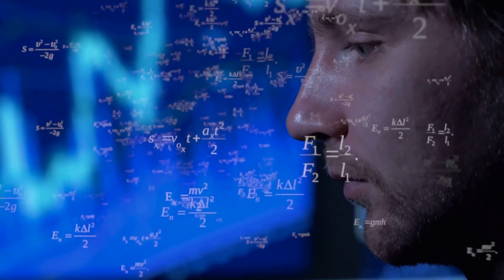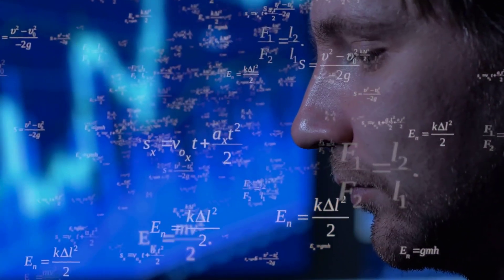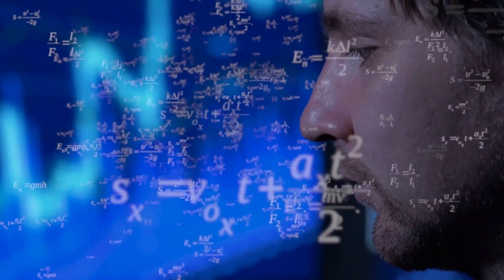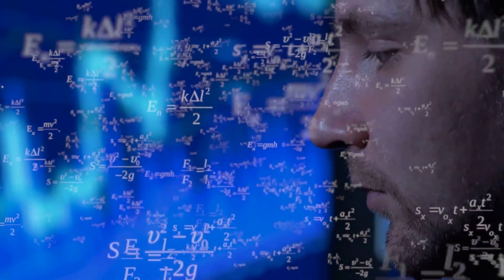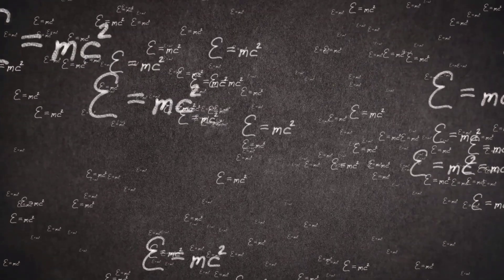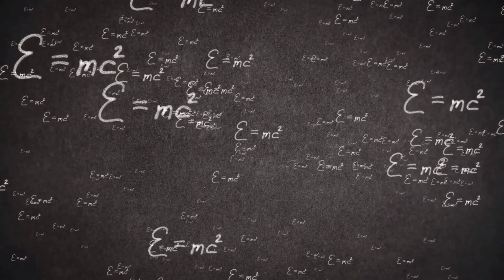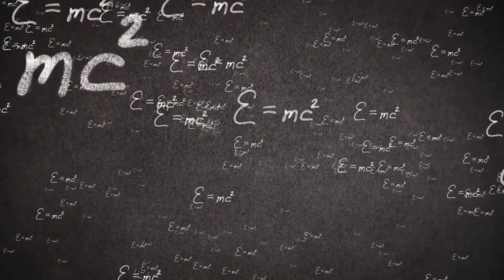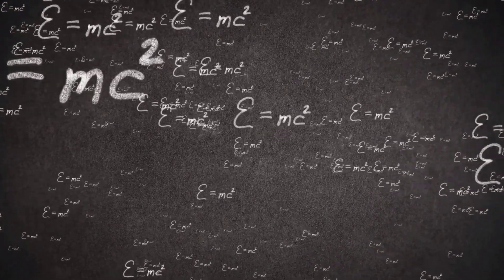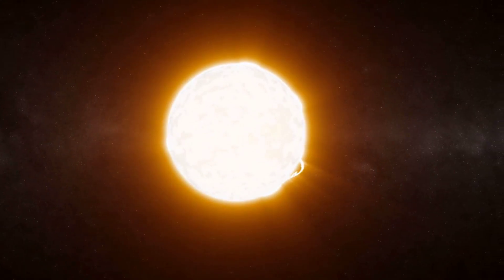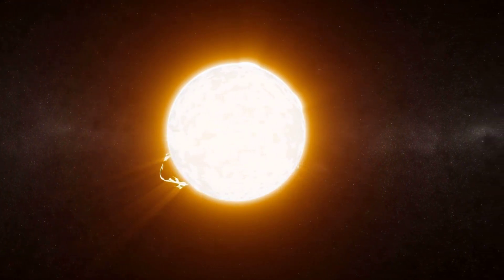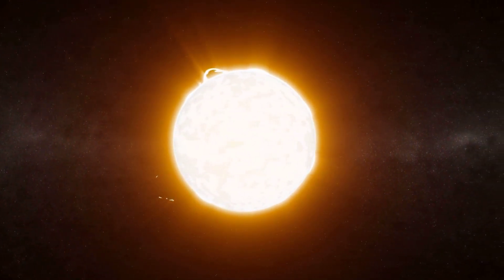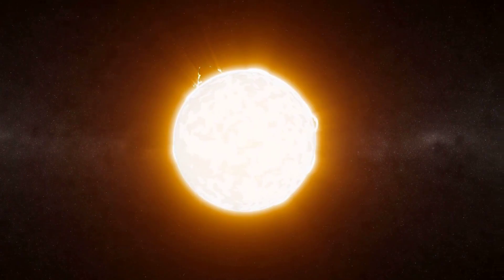In a universe of infinite wonders and unfathomable mysteries, a simple yet powerful formula emerges as the key to understanding the very nature of existence. E equals m times c squared. These four simple characters represent much more than a mathematical formula — they are a portal to understanding the relationship between mass and energy, the beating heart of stars, and the force that powers the universe itself.